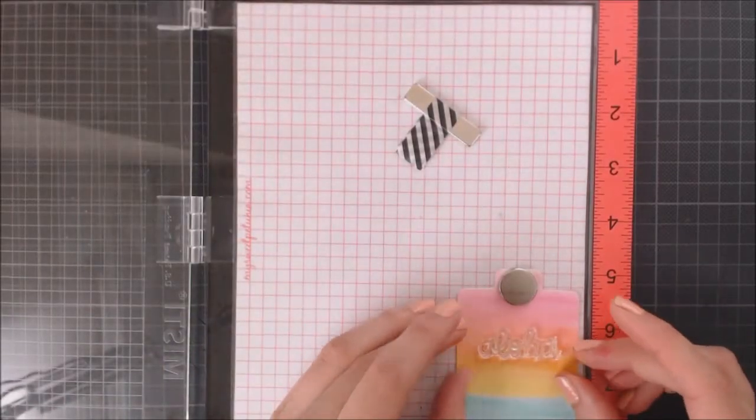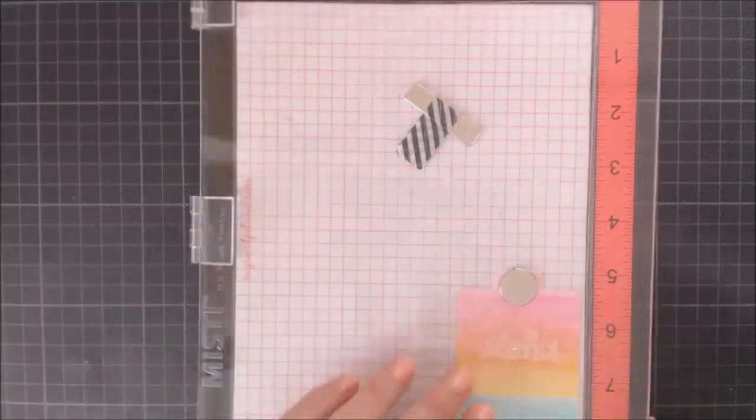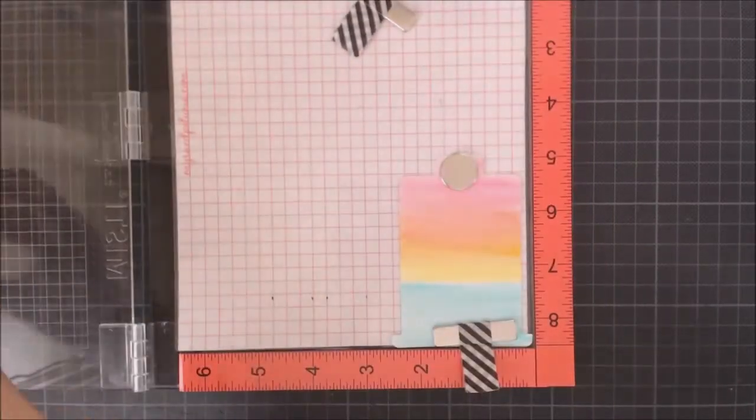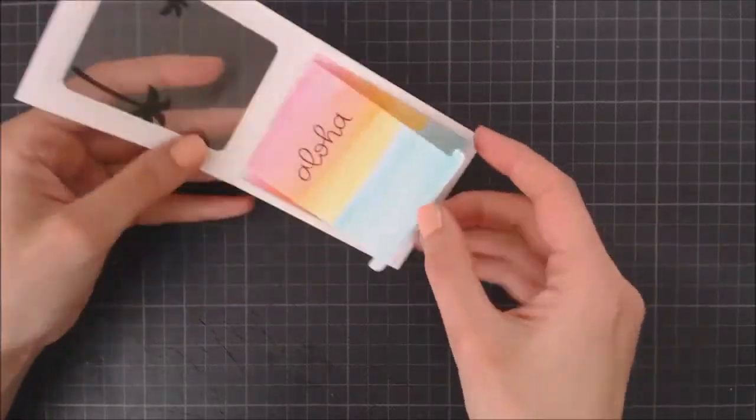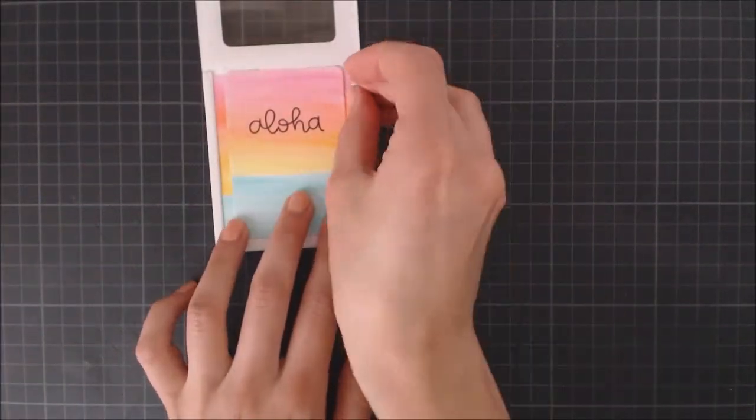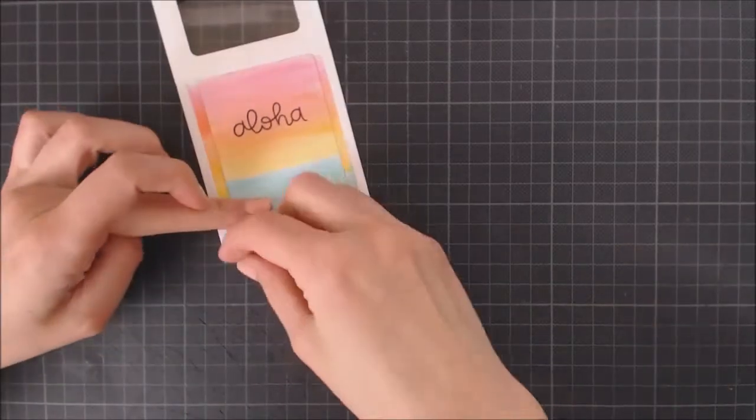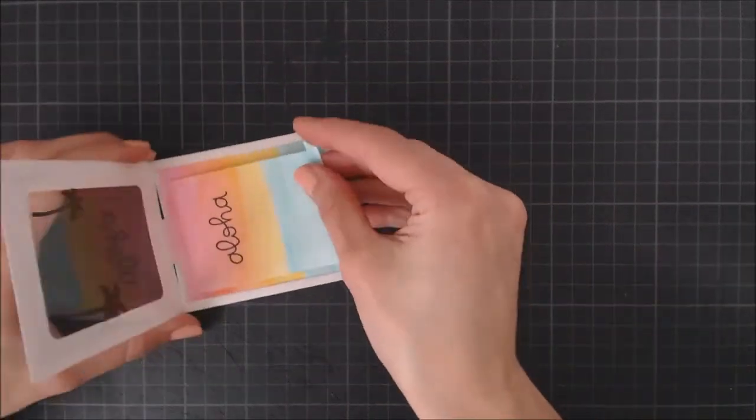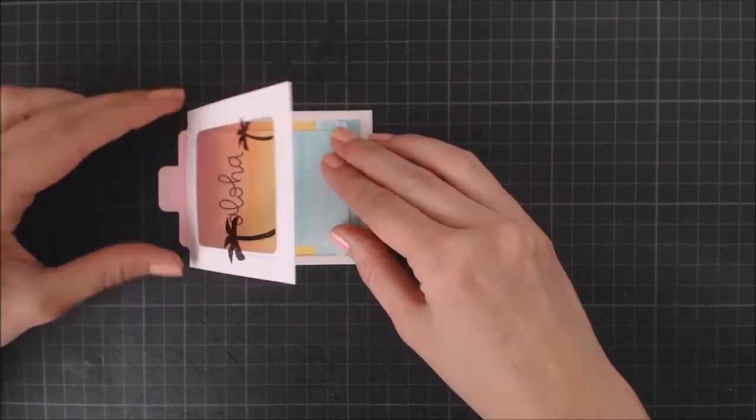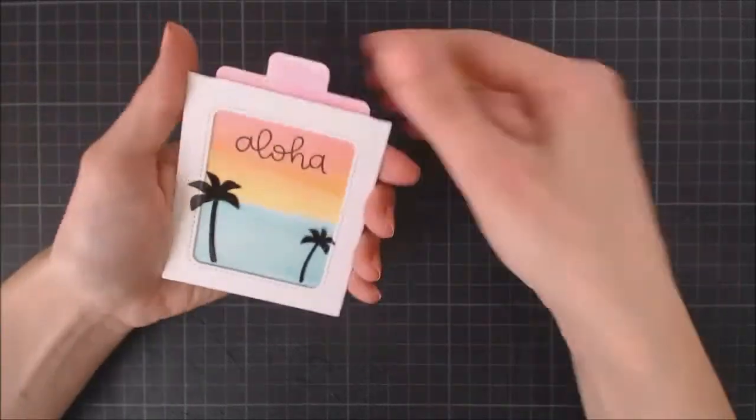Before I close the pocket, I'm going to stamp this greeting from the Aloha Mini stamp set on the tab. I absolutely love this scripty font. It's super cute. Now, I can go ahead and insert again the tab slider into the opening, peel off the adhesive tape, close the pocket, and the magic slider pocket is done. It's super easy to put together with these dies.